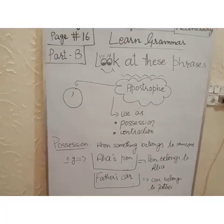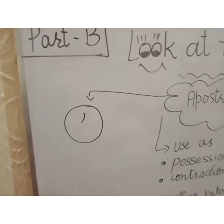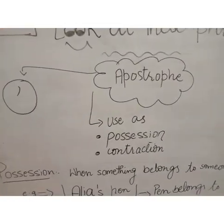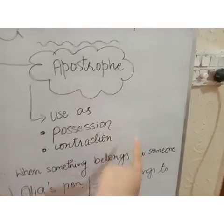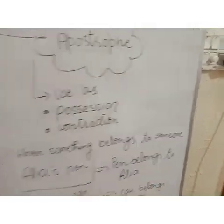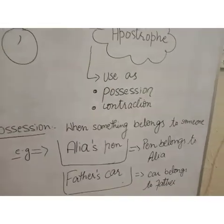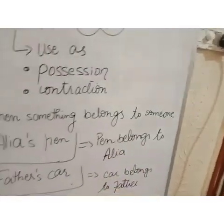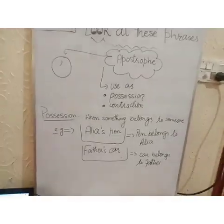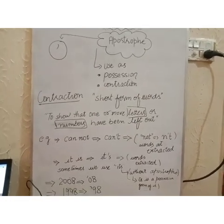Now look at the board. Today we are going to do the concept of the apostrophe. An apostrophe looks like a comma but its use is very unique — it is quite different. We use the apostrophe for two purposes: possession and contraction. Possession is when something belongs to someone. For example, 'Aliyah's pen' means the pen belongs to Aliyah. 'Father's car' means the car belongs to Father. When we show the relationship of an object to a person, that is possession.